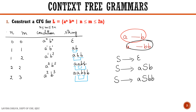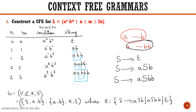So we can conclude by writing G = (V, Σ, R, S) where V = {S} (one non-terminal) and two terminals a and b. Σ = {a, b}. The rules R: S → aSb | aSbb | ε, and S is the start symbol.